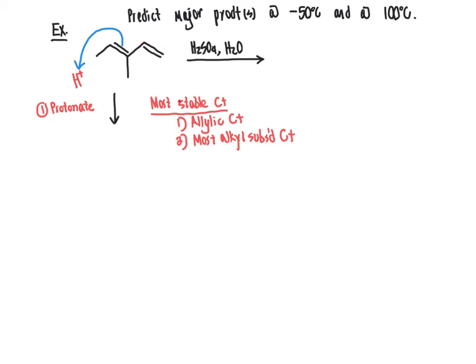That will be a tertiary carbocation that's also stabilized by resonance due to the fact that it is allylic. So that takes care of all these factors for making the most stable possible carbocation. So we'll go ahead and do that. So carbocation goes right here, allylic to our pi bond. The new proton will have formed a bond here, and that's implied.